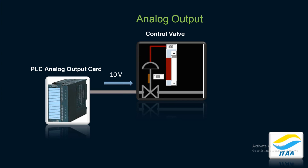If the PLC processor gives an output of 10V from the output card to the control valve, that 10V means: control valve, it's time to open full flow — it's time to open 100% of the control valve.